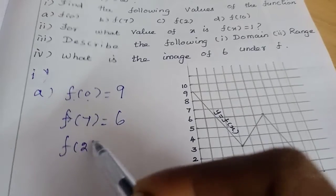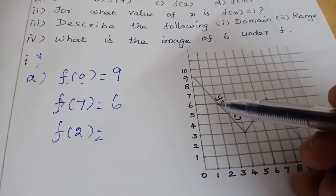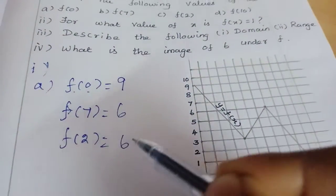So f(2). So f(2), we have 2, look at where 2 is on the x-axis. f(2) equals 6.